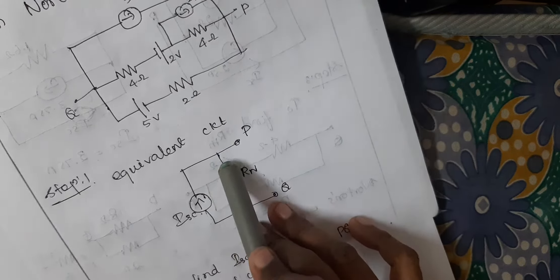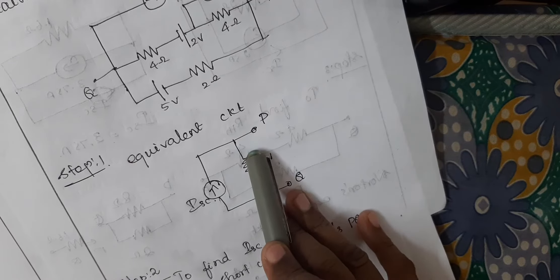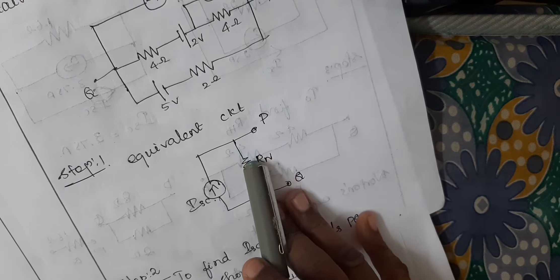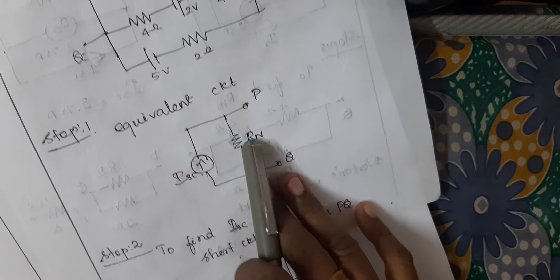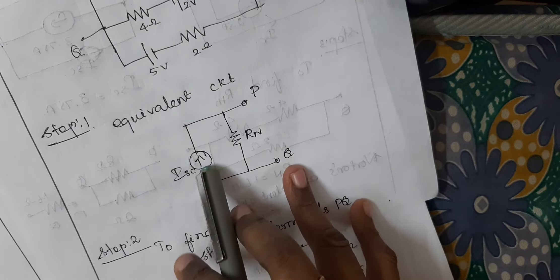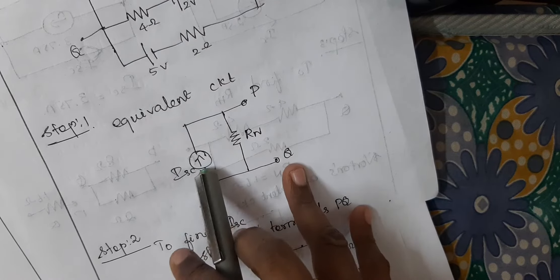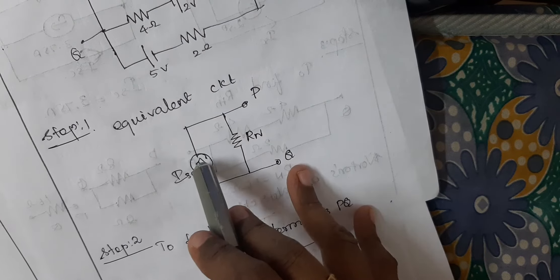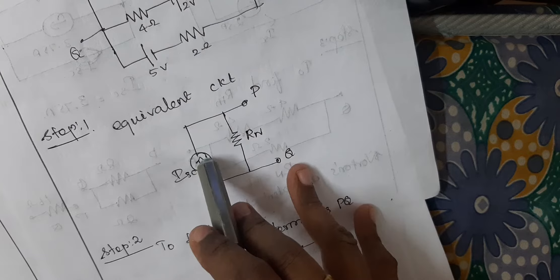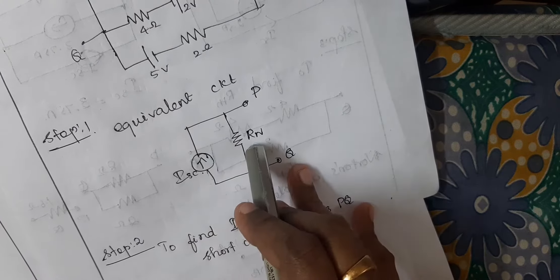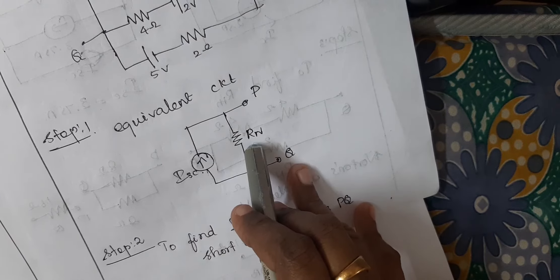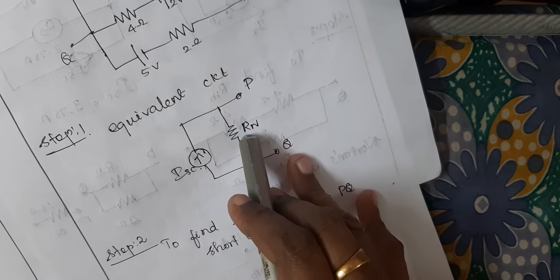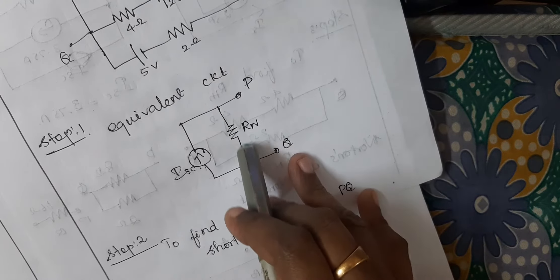So what is the first step? You want to draw the equivalent circuit. The equivalent circuit is the short circuit current — Norton's current is parallel to the Norton's resistor.